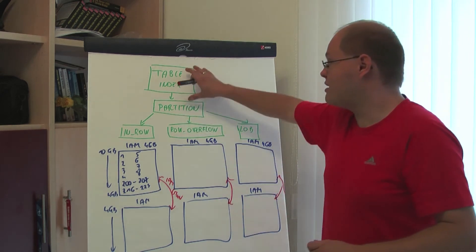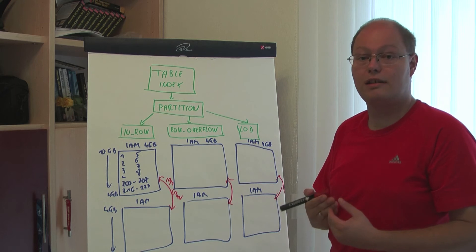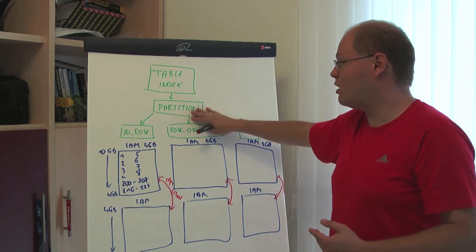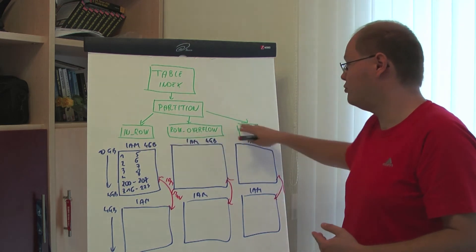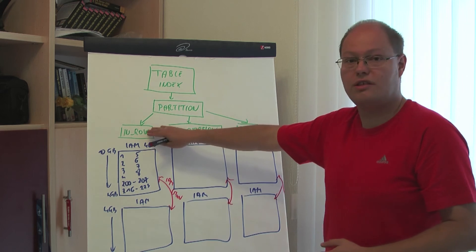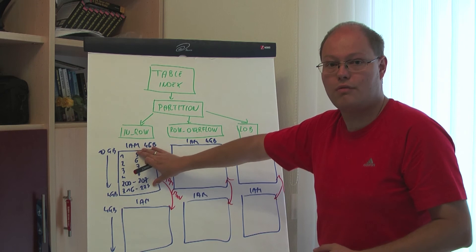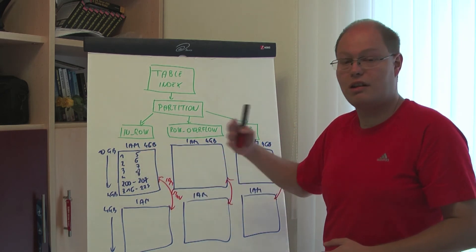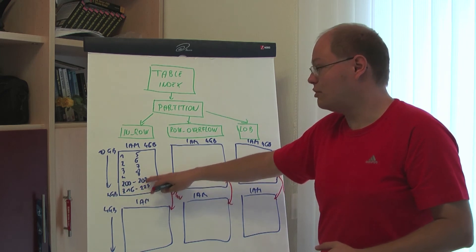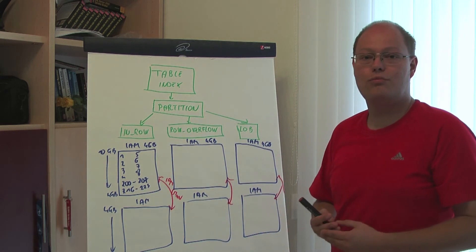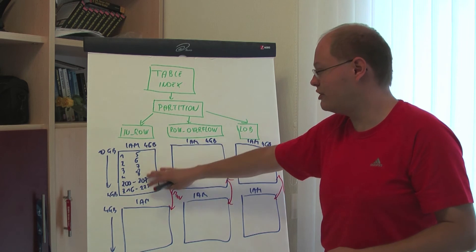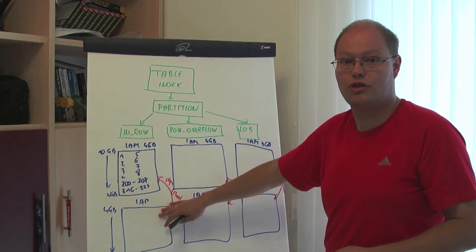As you can see, a table or index has a very complicated structure inside SQL Server. Every table or index has at least one partition, and inside that partition we can have up to three individual allocation units: In-row, Row Overflow, and LOB data. Inside those allocation units, SQL Server creates at least one IAM page. That IAM page keeps track of the first 8 pages allocated in mixed extents, and also tracks which uniform extents are allocated to that allocation unit. If our data file exceeds 4 GB, SQL Server creates an IAM chain — several distinct IAM pages linked together for a single allocation unit.